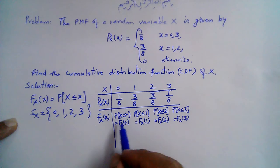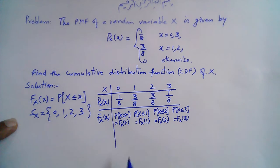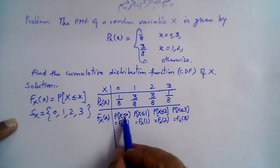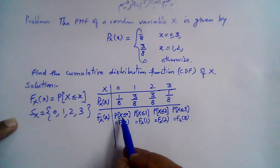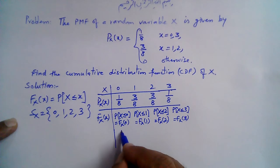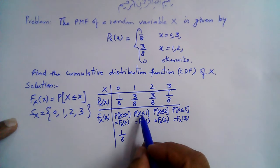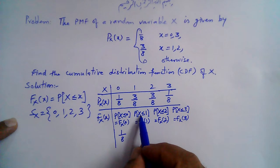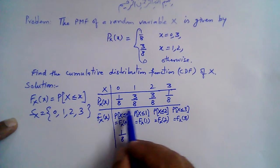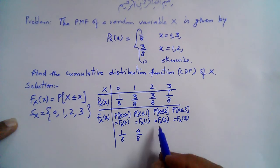At x = 0: P(X ≤ 0) = 1/8, since the probability is zero for values less than 0 and 1/8 at exactly 0. At x = 1: P(X ≤ 1) = P(X < 1) + P(X = 1) = 1/8 + 3/8 = 4/8.